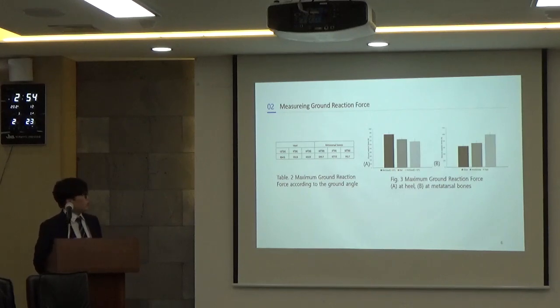Table 2 and table 3 show average maximum ground reaction force according to the ground angle. At heel, the 10 degrees downhill has 805 newtons, which is bigger than flat land or 10 degrees uphill. But in the case of metatarsal bones, the 10 degrees uphill is bigger than 10 degrees downhill or flat land. In 10 degrees downhill, the center of mass is located in front of the body, so the load is concentrated at heel. In 10 degrees uphill, the center of mass is located behind the body, so the load is concentrated at metatarsal bones.